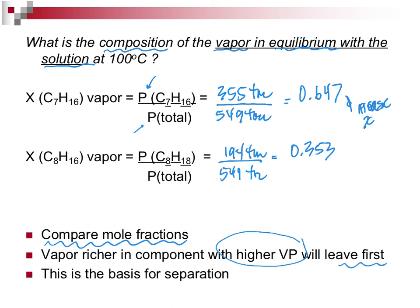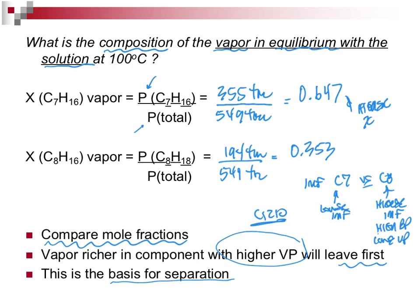Why does it leave first? Well, think of the intermolecular forces of C7 versus C8. C7 has lower intermolecular forces. C8, higher intermolecular forces. Higher boiling point, lower vapor pressure. This is chemistry 1210. And this is the basis for separation.